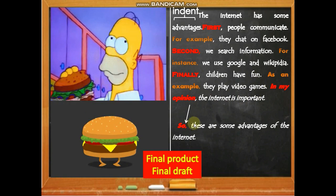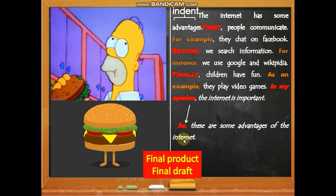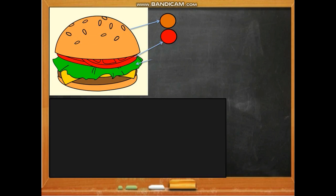'These are some advantages of the internet.' In the conclusion, we have two options: either we write an opinion or we write a summary. Let's now look at the similarities between what we started with and what we have.